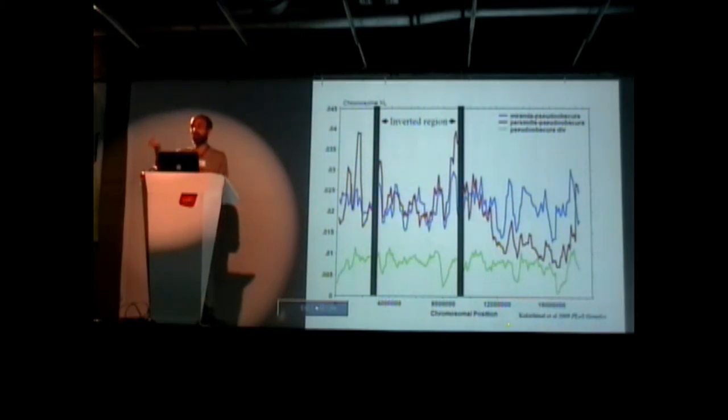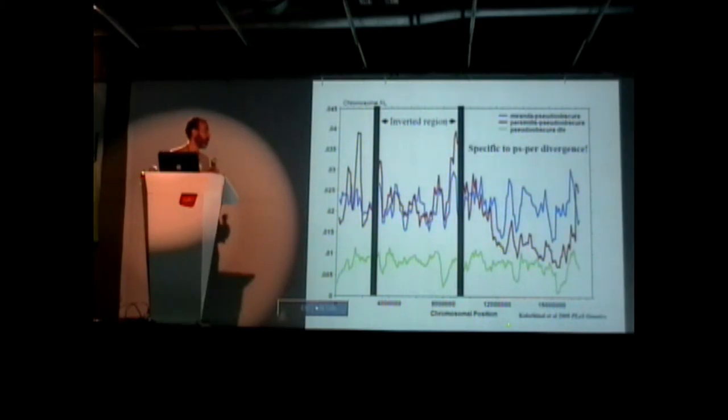The effect of crossing over makes these two species different. So this suggests it's not just the inversions, but it's specifically the crossing over effects of the inversions, and specifically the pseudoobscura-persimilis inversions.